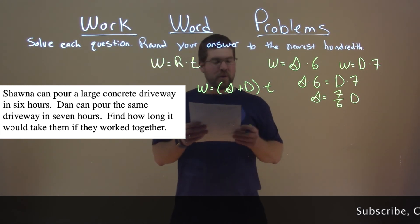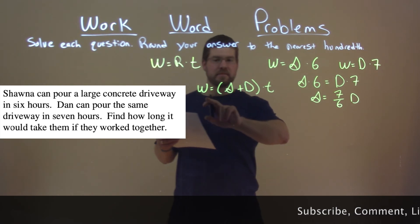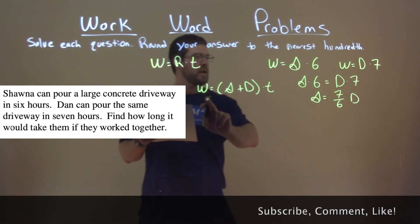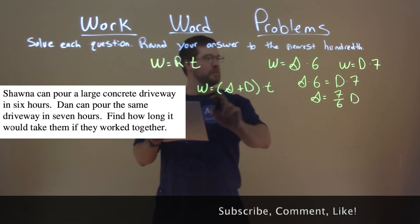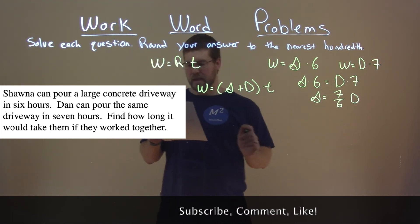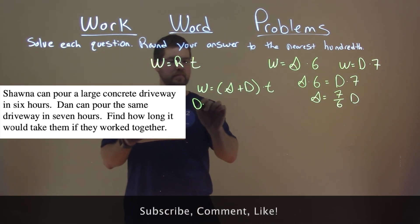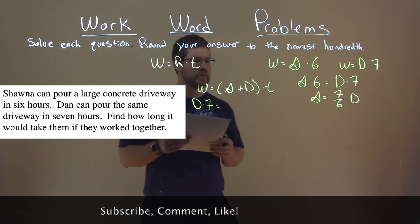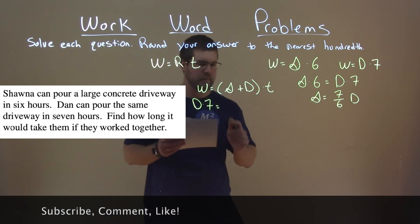So, what we're going to do now is adapt what we found here to here. Well, we know work is equal to seven times Dan, or Dan times seven, and the goal here is really to get rid of the variable S and W.